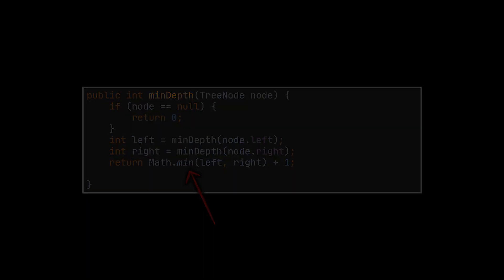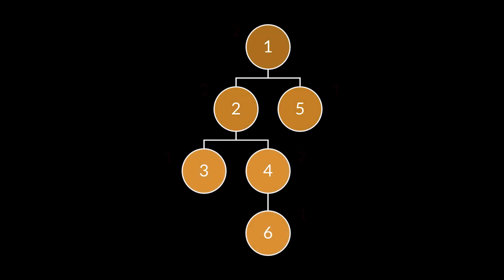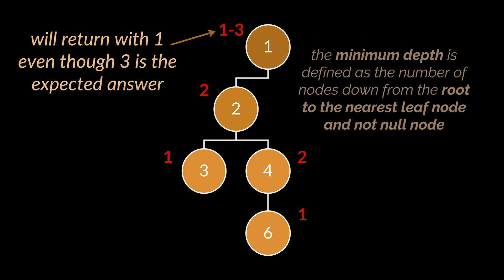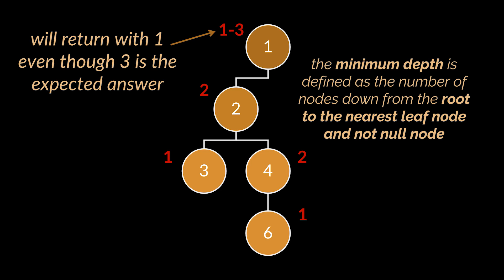However, there is a catch. You see, if this method was provided with the tree we were previously making use of, it will work. It will return two as the minimum depth, and that is a correct answer. But what if this method was provided with that tree instead? It will return with a minimum depth of one, even though the expected minimum depth here is three.